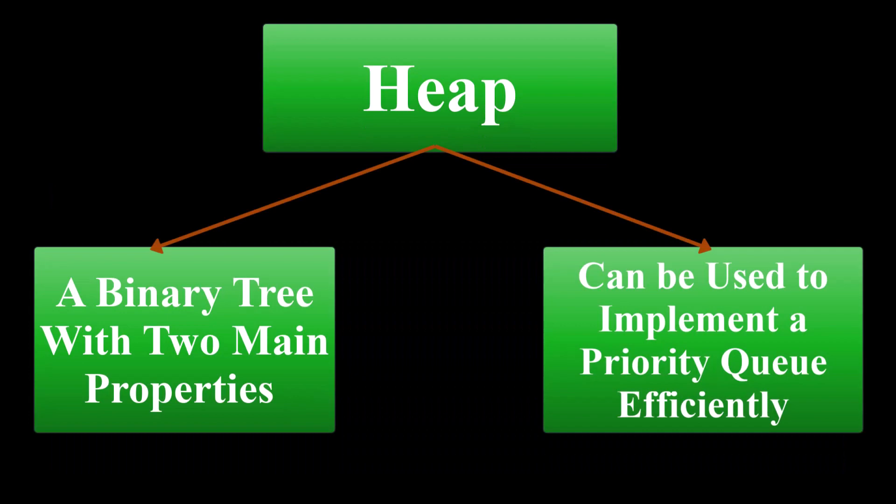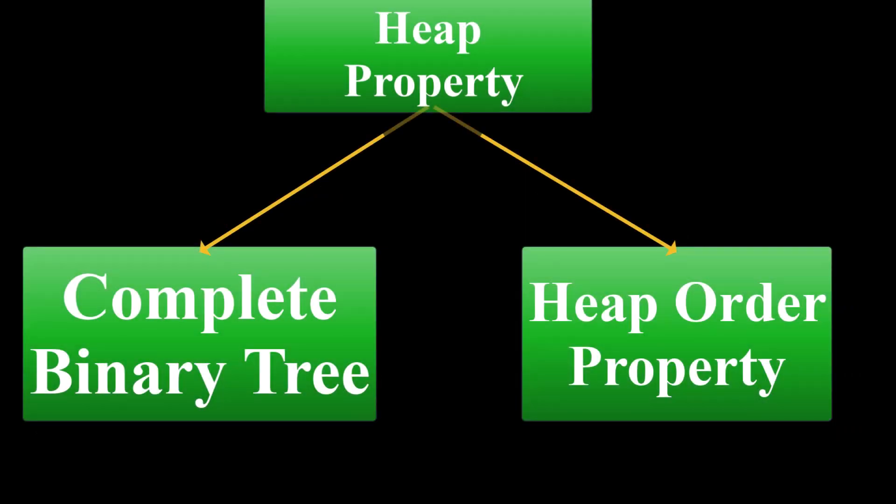A heap, on the other hand, is a specific data structure that can be used to implement a priority queue efficiently. A heap is a binary tree with two main properties. It is a complete binary tree, meaning all levels of the tree are fully filled, except possibly for the last level, which is filled from left to right.